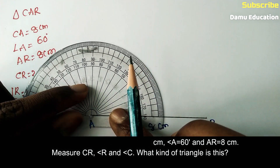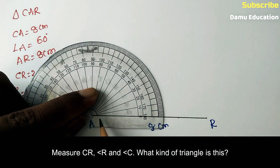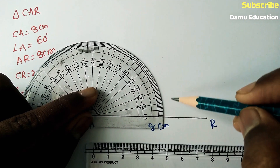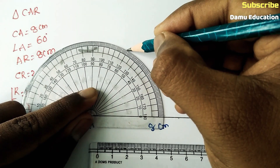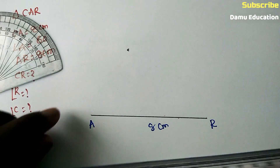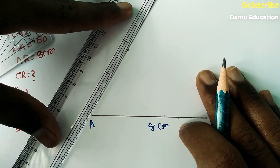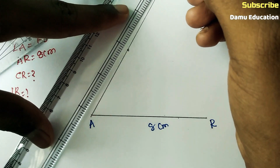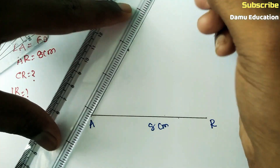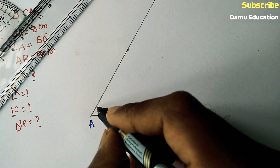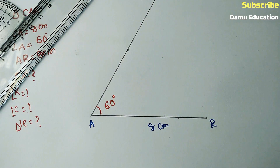Since the line AR coincides with the protractor zero line on the right side, we need to measure the angle from that side, going anti-clockwise: 0, 10, 20, 30, 40, 50, 60. Mark that point and draw one ray from A at an angle of 60 degrees.